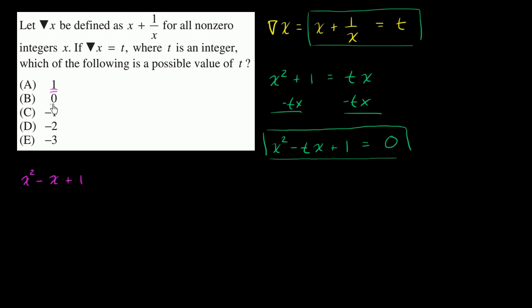If t is equal to zero, then this middle term disappears, and you're just left with x squared plus one.